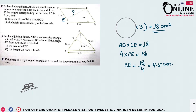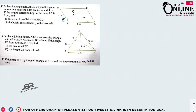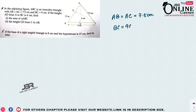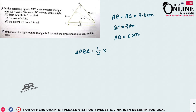Sum number 6: in the adjoining figure, ABC is an isosceles triangle where AB = AC = 7.5 cm and BC = 9 cm. The height AD = 6 cm. Area of the triangle = ½ × base × height = ½ × 9 × 6 = 27 cm².